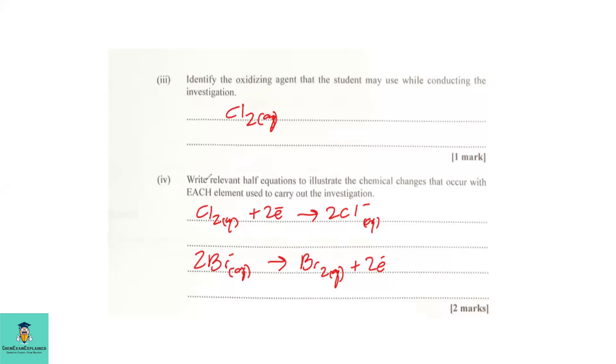Part four, write relevant half equations to illustrate the chemical change that occur with each element used to carry out the investigation. So, let's look at it this way. If we have chlorine forming chloride ion, we must do two things. First, we should ensure that we have mass balance. So, here I have two chlorine. I must have two chloride ions here. Let's put this to be aqueous. This is also aqueous.